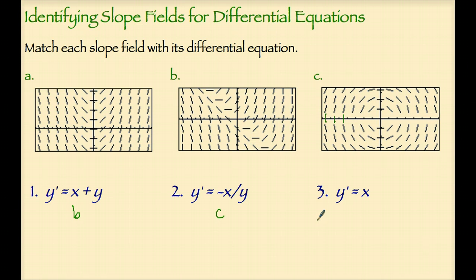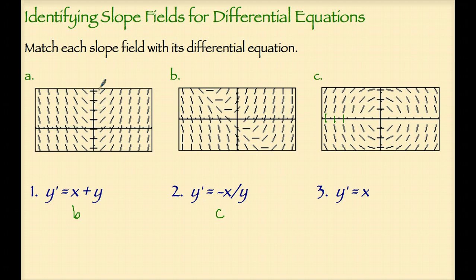Even though we already know the answer for number 3, let's see how this differential equation matches its slope field. Y prime equals x means the slope is equal to the x-value of each coordinate. So when x is 0, the slope should be 0. When x is 1, the slope should be 1. Examining the slope field for letter A, you can see that when x is equal to 0, the slopes are 0. When x is equal to 1, the slopes are 1. When x is equal to negative 1, the slopes are negative 1, etc. That's why A is the slope field for the differential equation y prime equals x.